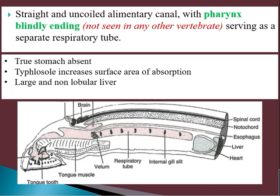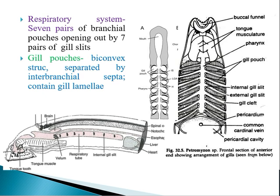The esophagus leads to a small chamber that cannot truly be called a stomach — a true stomach is absent. In the intestine, the wall has longitudinal foldings called the typhlosole, which increases the surface area for absorption, analogous to villi in higher vertebrates. There is also a large, non-lobular liver connected to the digestive system.